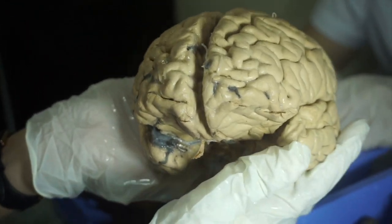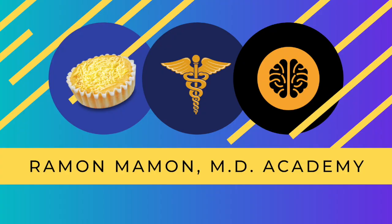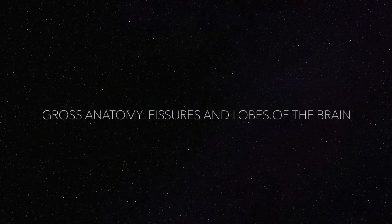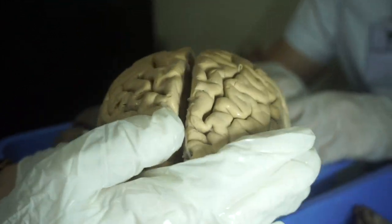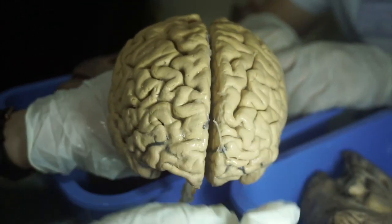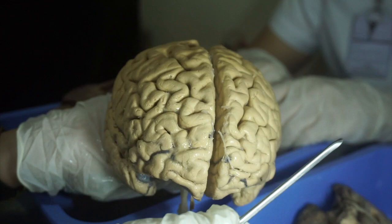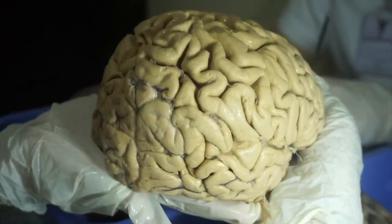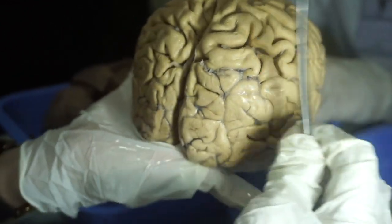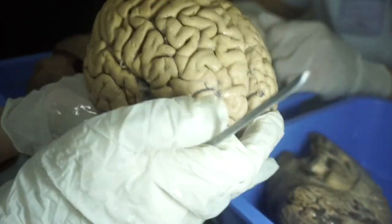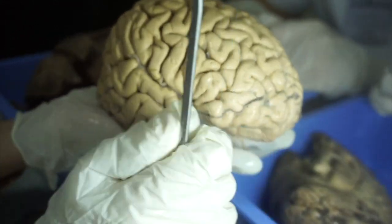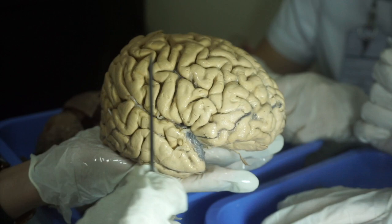Let's study the fissures and the lobes of the brain. This is the anterior part, this is the superior part, and then this is the posterior part of the brain. This is the right cerebral hemisphere.